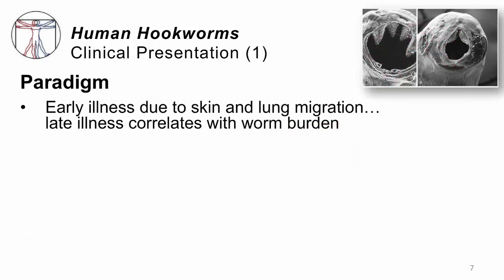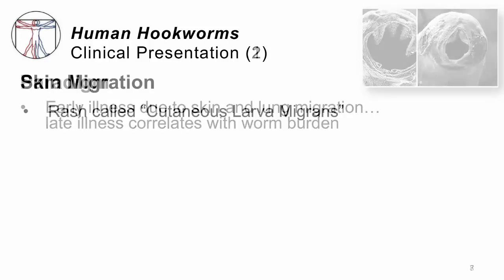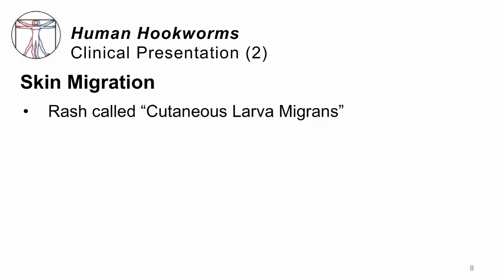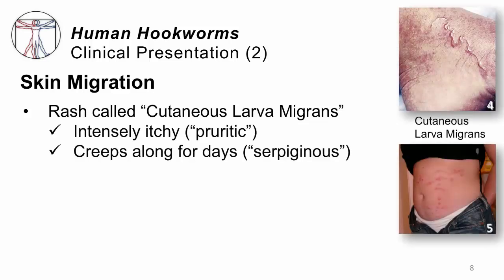How does it present clinically? Early on, the illness may show up as the worms penetrate through your skin or your lungs, and later on you'll have a high worm burden in the GI tract, so late infection will present differently. Early on, there is a skin migration phase, and we call that rash cutaneous larva migrans — which literally means worms moving through your skin. It can show up in different ways, but the classic presentation is an intensely itchy, or in medical terms, pruritic rash.